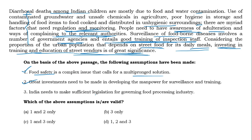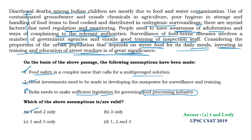Statement 3: 'India needs to make sufficient legislation for governing the food processing industry.' The author tells many solutions for food security but nowhere stresses about legislation, and there is no mention of the food processing industry. So statement 3 is incorrect. Since statements 1 and 2 are correct, option A is the right answer. Yes, option A is correct.